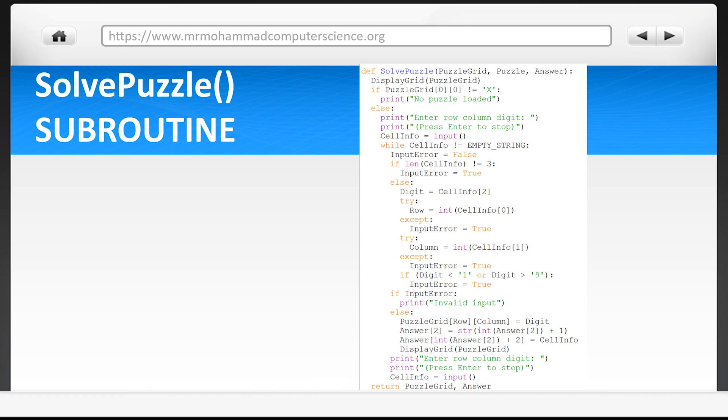The first thing we see in SolvePuzzle is that the DisplayGrid subroutine is called. You can already assume what this one does but let's look at it.